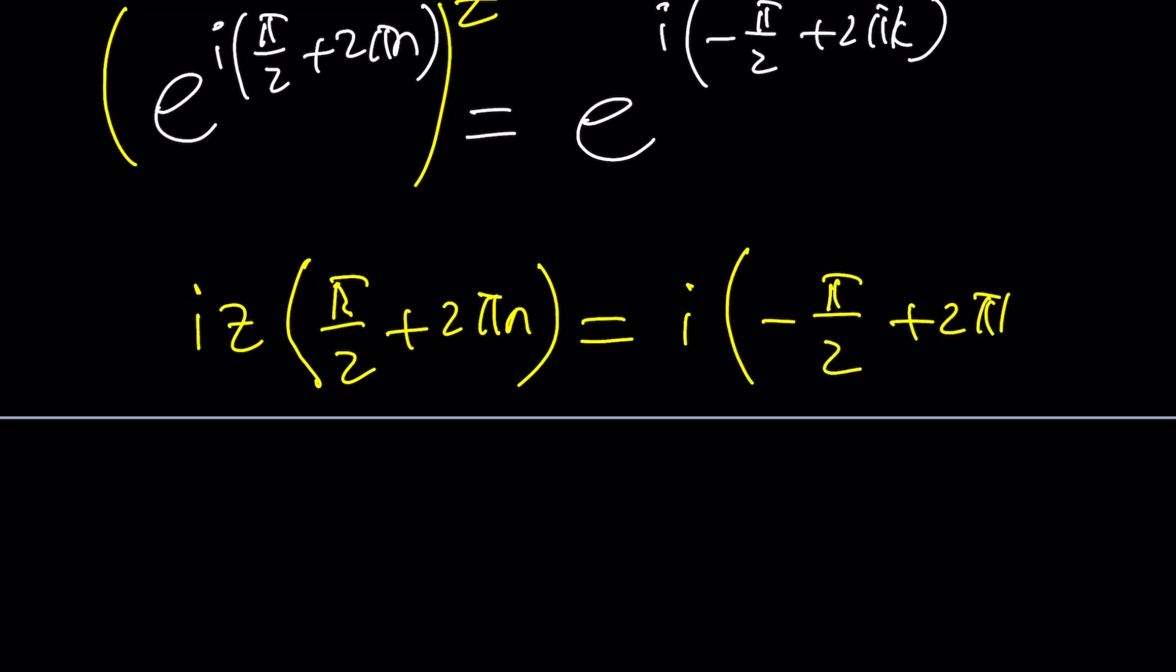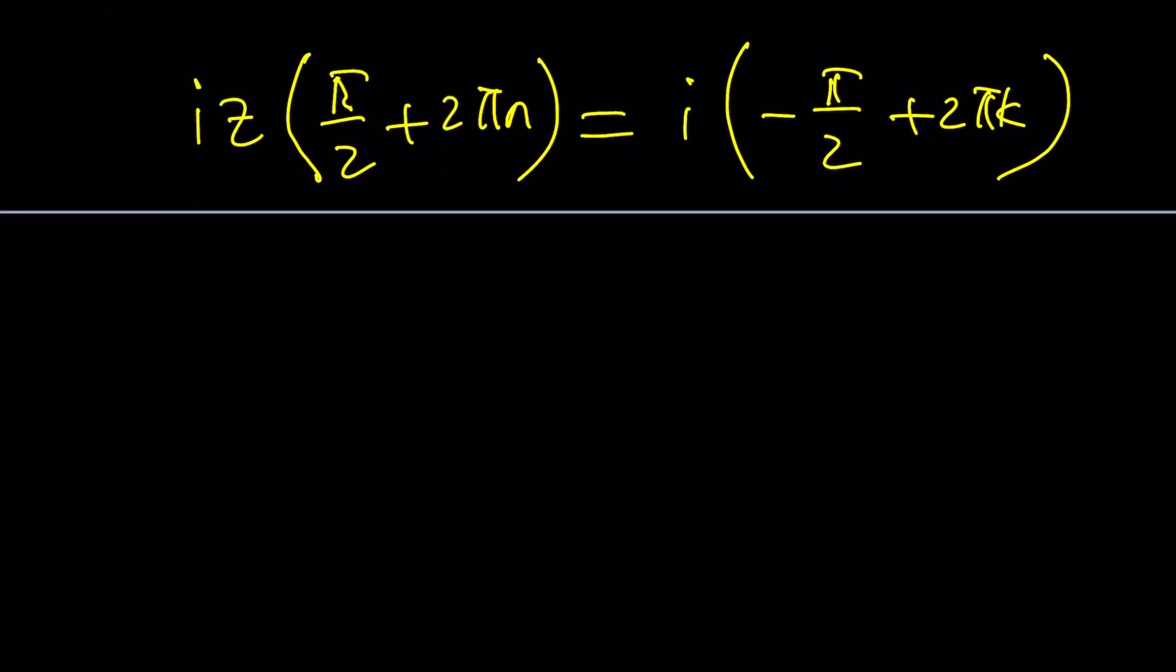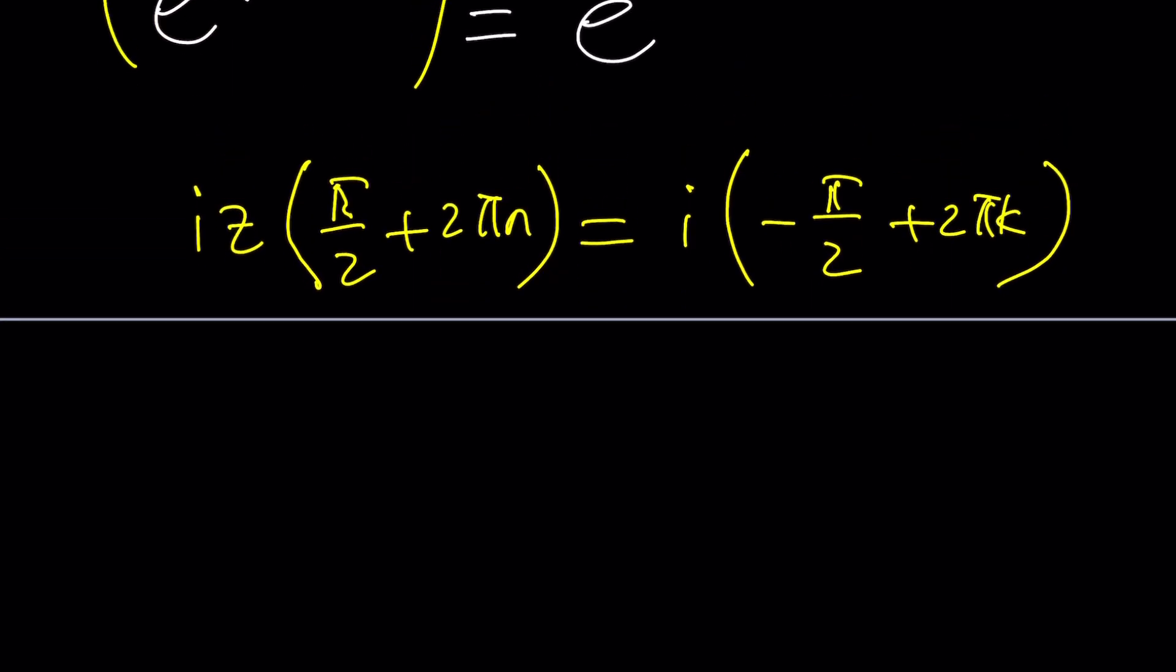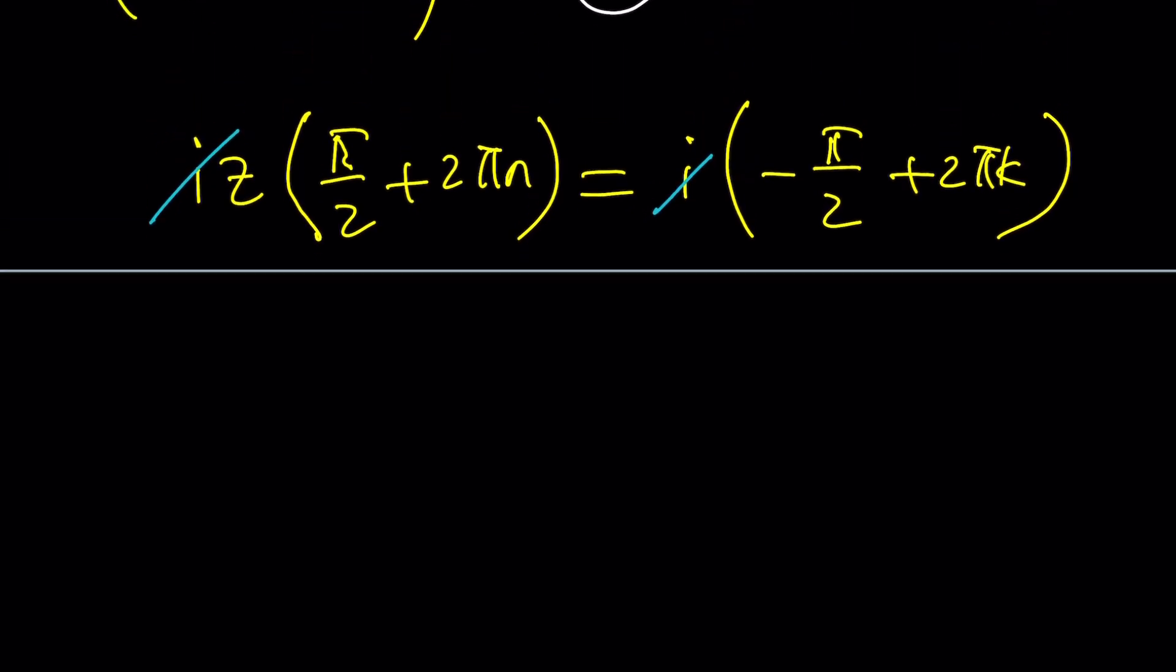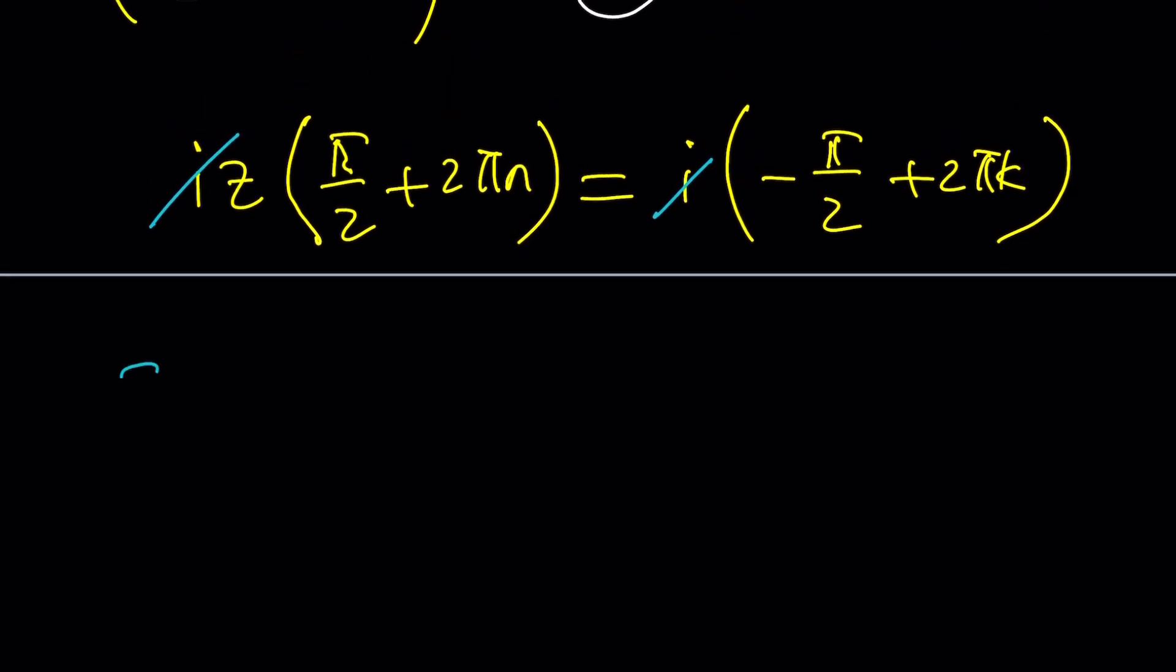So we can go ahead and proceed like this. Obviously, n and k don't have to be the same integers. What happens if they are the same? That's a good question. We can also look at that. I'm going to go ahead and cancel out i because i is not 0. It's like, i am not 0. No. i is not 0. You're not i. I am. i is a number. If I say i am a number, that would be false. So z from here will be a quotient. So it's going to be like negative pi over 2 plus 2 pi k divided by pi over 2 plus 2 pi n.